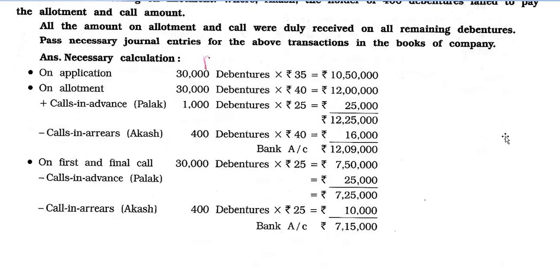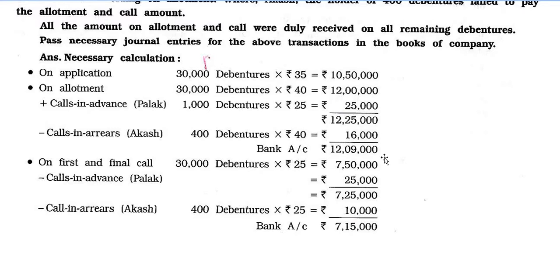Necessary Calculation: On application — 30,000 × Rs. 35 = Rs. 10,50,000. On allotment — 30,000 × Rs. 40 = Rs. 12,00,000, plus call-in-advance (1,000 × Rs. 25 = Rs. 25,000), minus call-in-arrears on allotment (400 × Rs. 40 = Rs. 16,000); Bank account on allotment = Rs. 12,09,000. On first and final call — 30,000 × Rs. 25 = Rs. 7,50,000, minus call-in-advance Rs. 25,000, minus call-in-arrears (400 × Rs. 25 = Rs. 10,000); Bank account on call = Rs. 7,15,000.